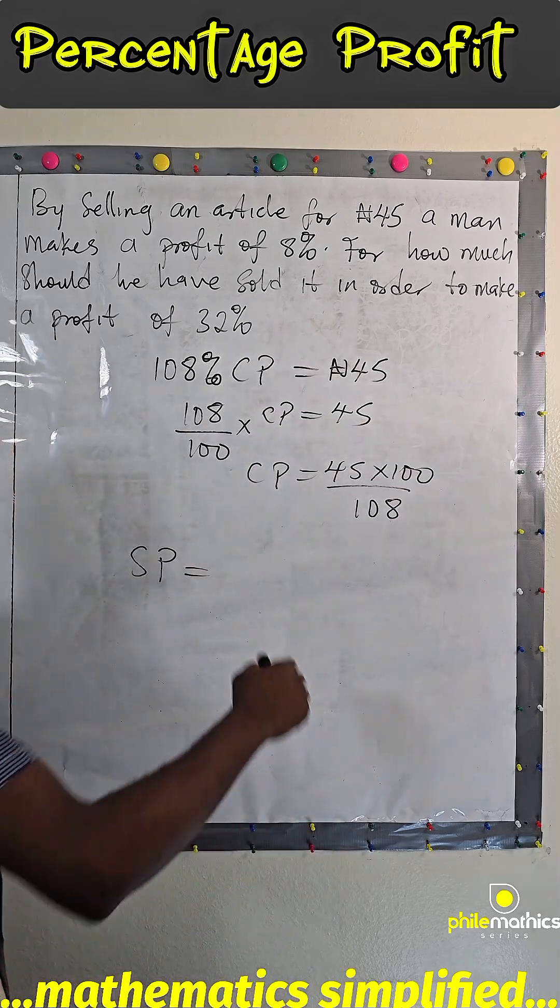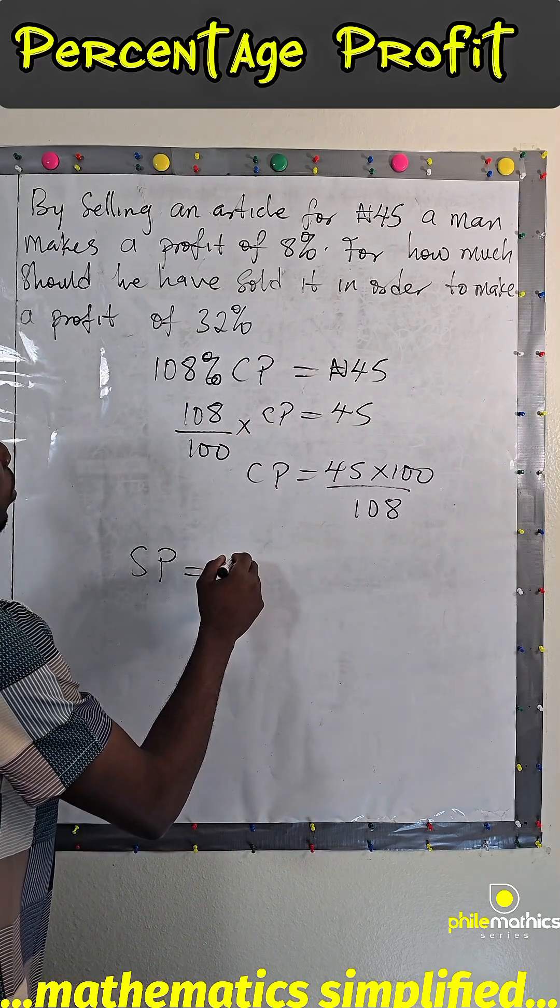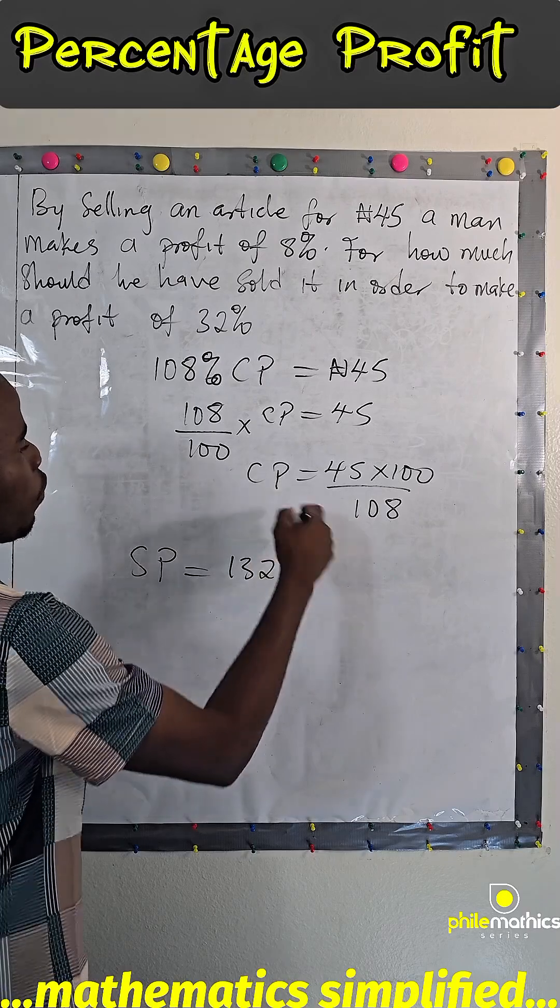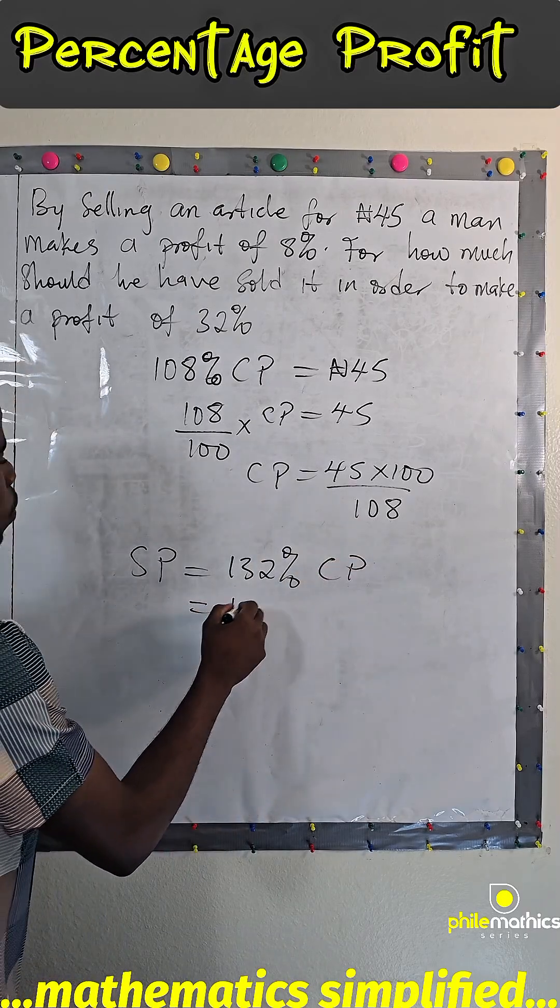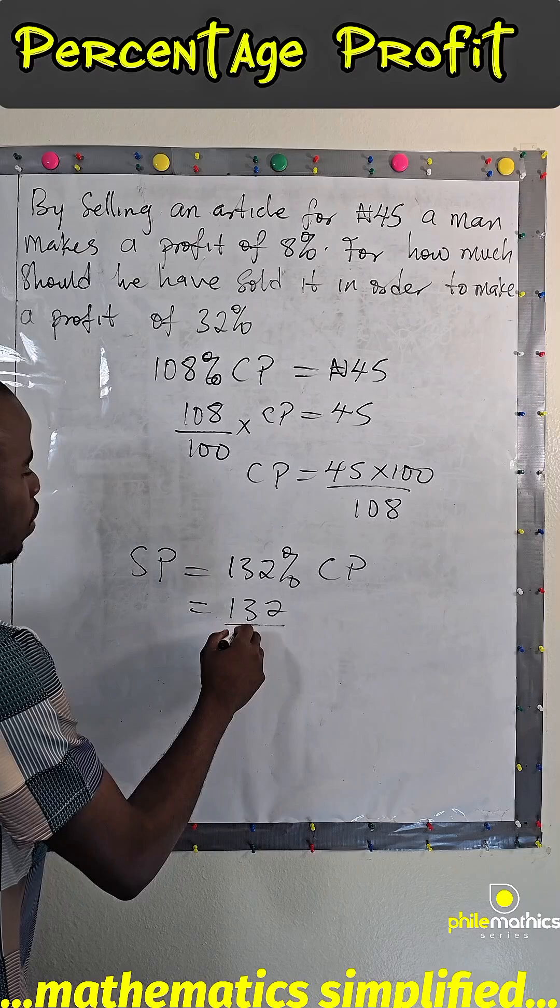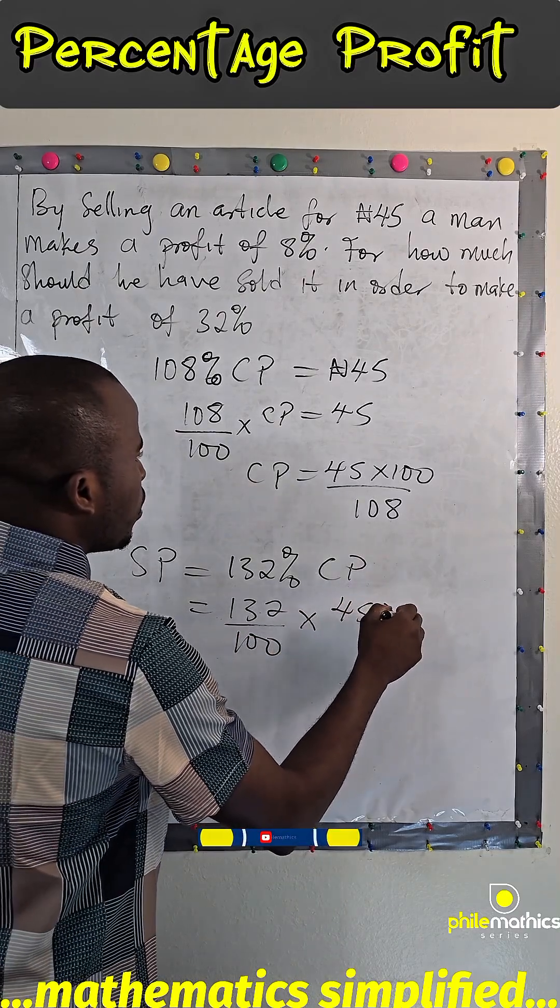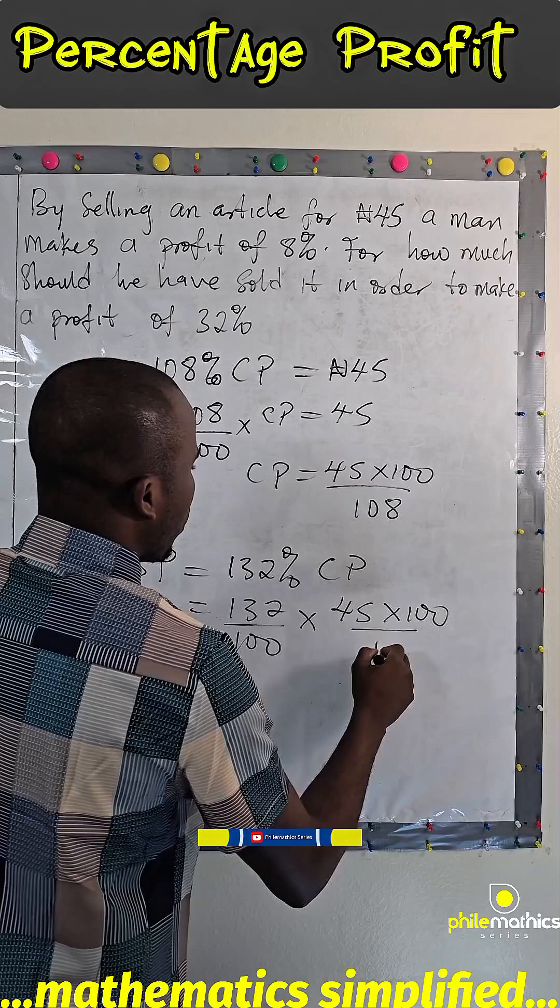That's how it will give us the amount he will make. So, this would be 132% of the cost price, which is 132 over 100 times 45 times 100 over 108.